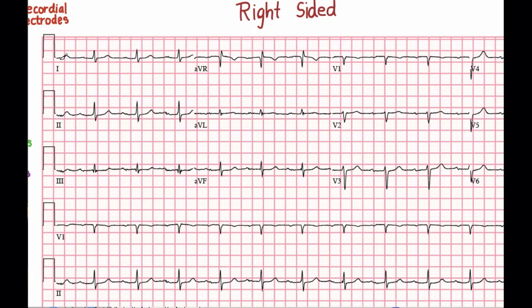The 12 leads of the EKG are labeled here: 1, 2, 3, AVR, AVL, AVF, V1, V2, and V3, V4, V5, and V6.